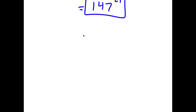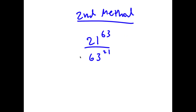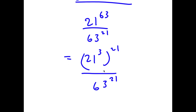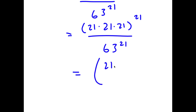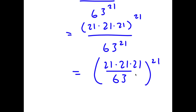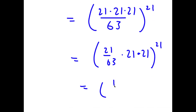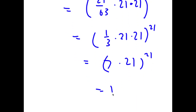I actually have a second method of solving this problem. Starting again with 21 to the power of 63 over 63 to the power of 21, this time I'm going to rewrite 21 to the power of 63 as 21 to the power of 3, all to the power of 21. So I have 21 times 21 times 21, all to the power of 21, over 63 to the power of 21, which equals 21 times 21 times 21 over 63, all to the power of 21. This is the same as 21 over 63 times 21 times 21 to the power of 21. Since 21 over 63 is one-third, and one-third times 21 is 7, I have 7 times 21 to the power of 21, which is again 147 to the power of 21.